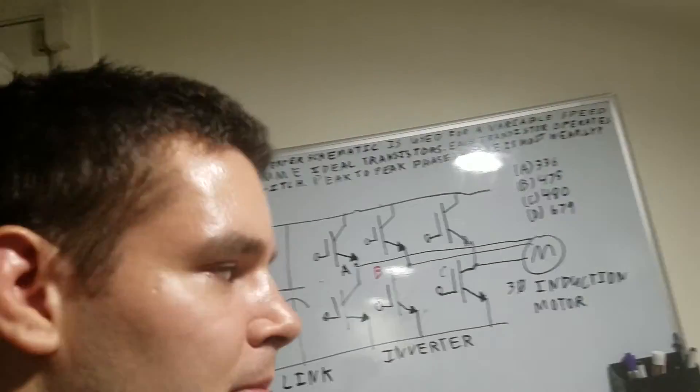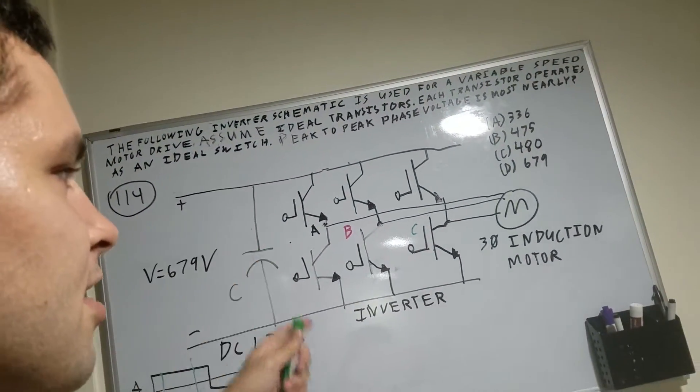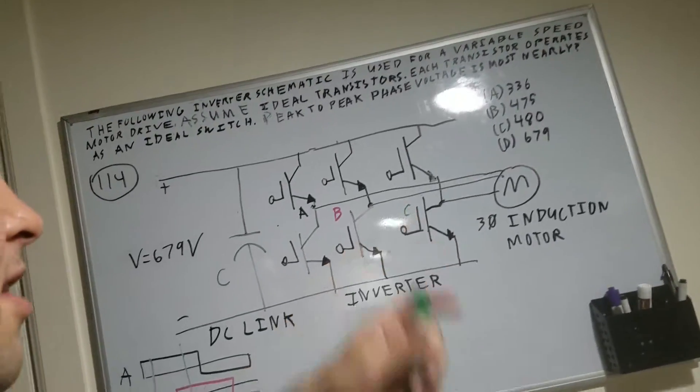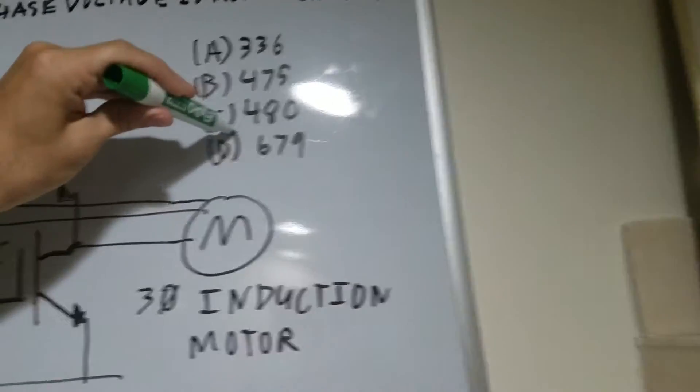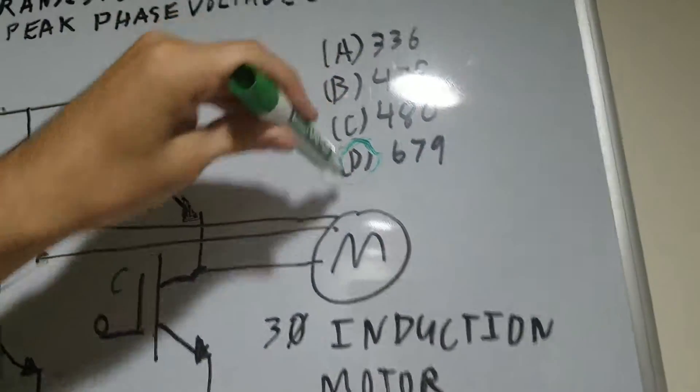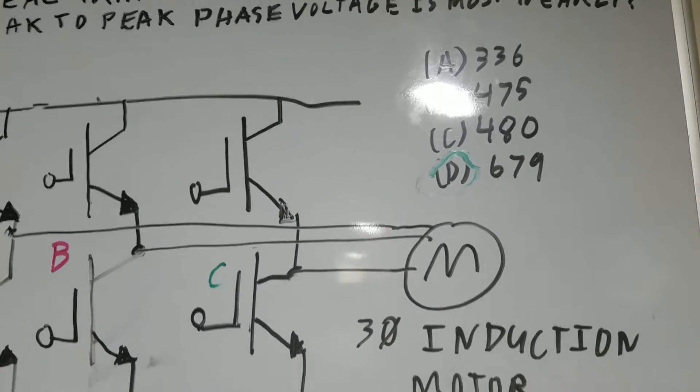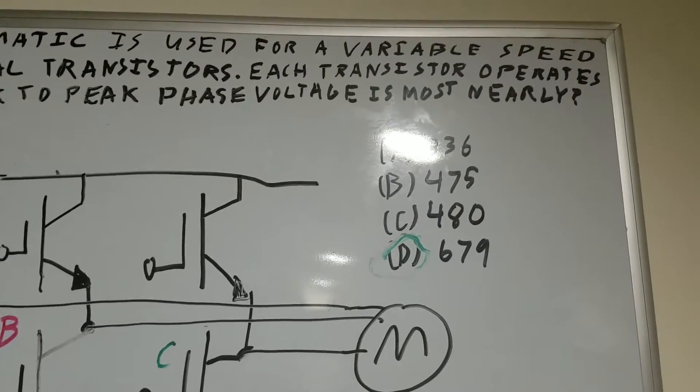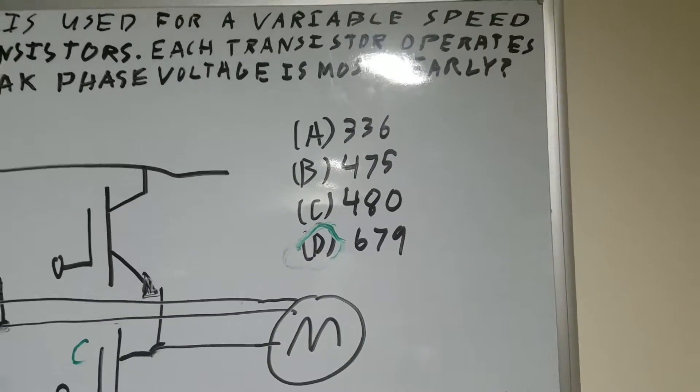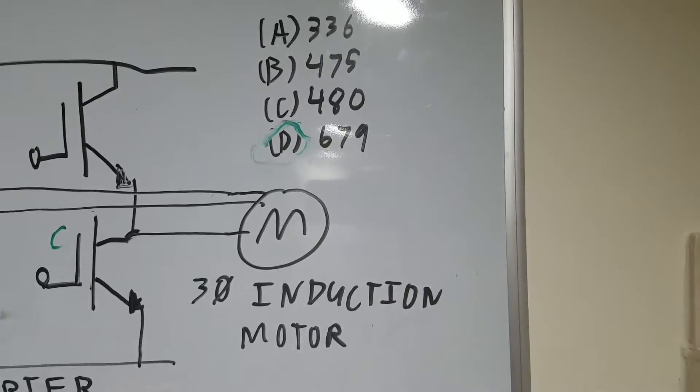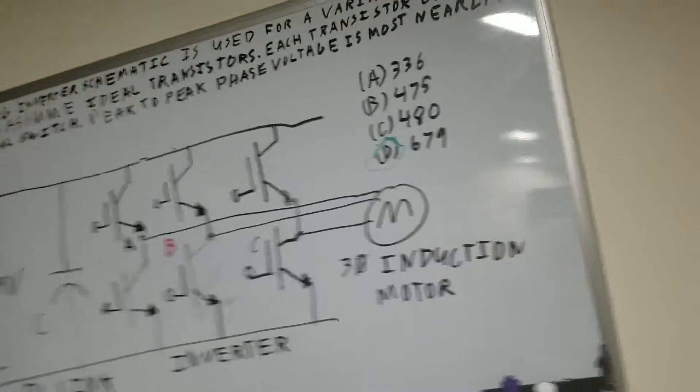So I think a lot of people might get caught up on this, they'll try to overthink the problem and think that the 679 volt solution to the peak to peak wave is too obvious and they won't select that one. They might select the wrong solution even though it's a really easy problem, one of those quick ones, but you might end up spending way too much time on the problem.